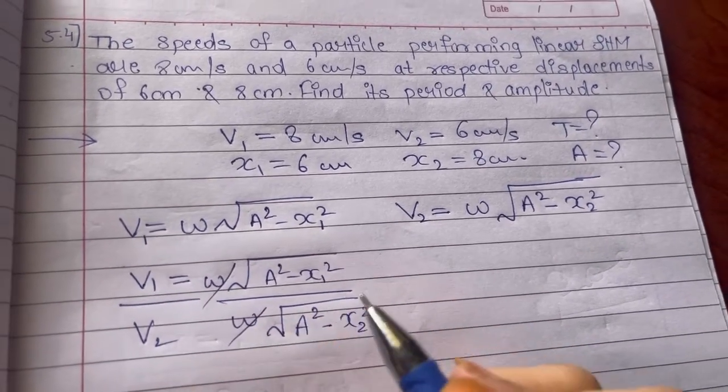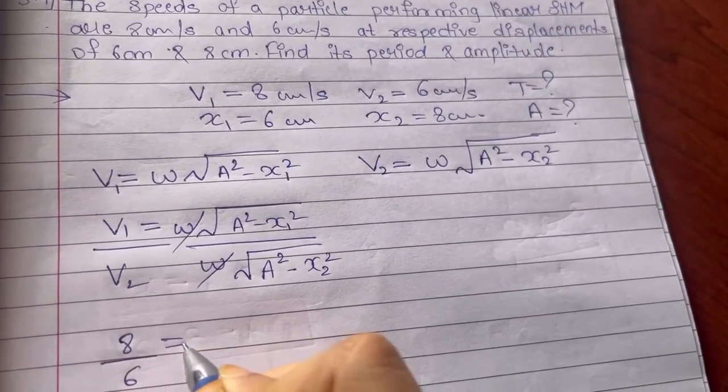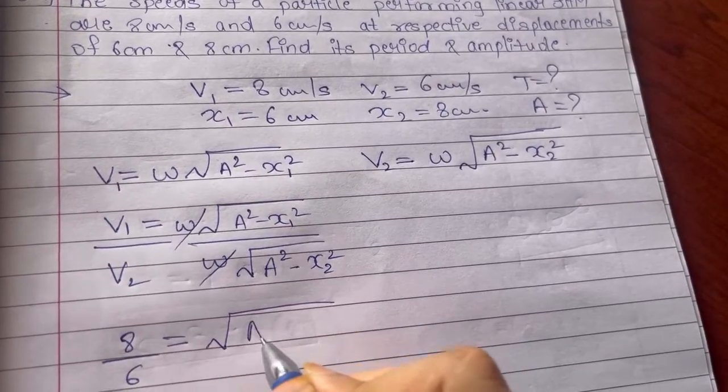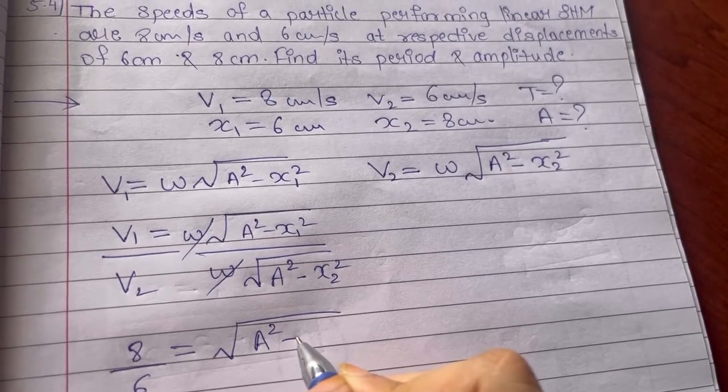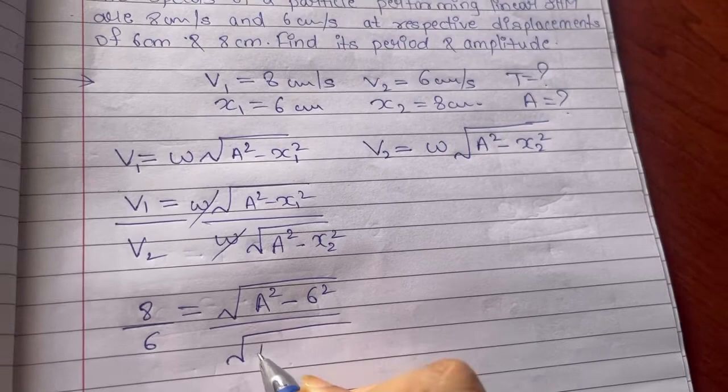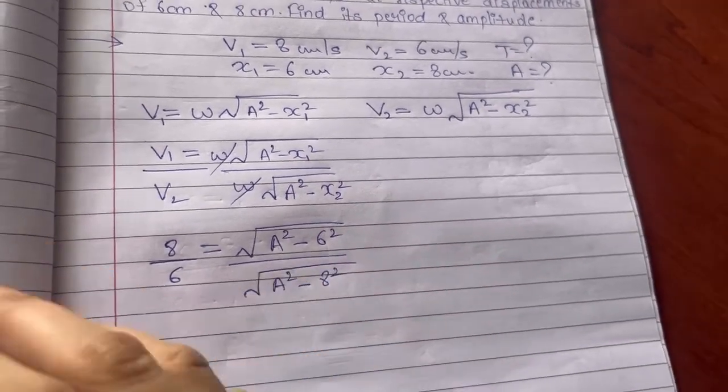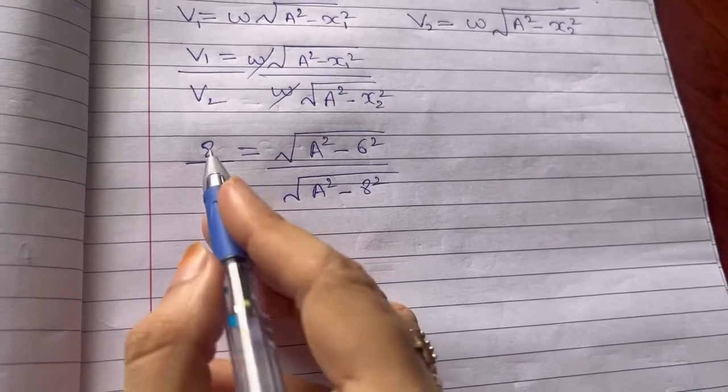Omega omega gets cancelled. V1 is 8, V2 is 6. A square minus x1 is 6.